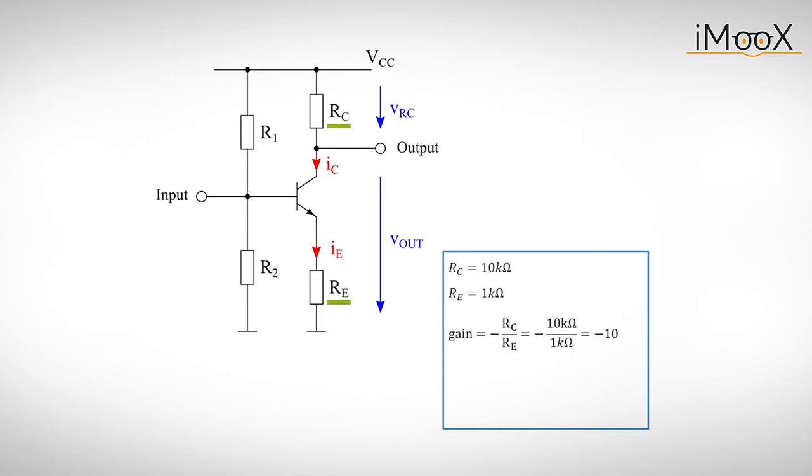If we use for instance 10k for RC and 1k for RE, we get a gain of minus 10.